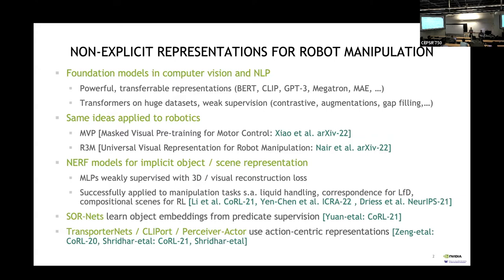As roboticists, I typically tend to say we need to explicitly supervise our models on a very specific task to make sure they have the right kind of 3D representations. But these kinds of models are often trained just on masking tasks. For example, masked autoencoders (MAE): the input is an image, you mask out huge sections of it, and then the transformer has to generate an embedding from which you can reconstruct the complete image. There's no explicit semantics to this task — the capability just comes from training on huge amounts of data.